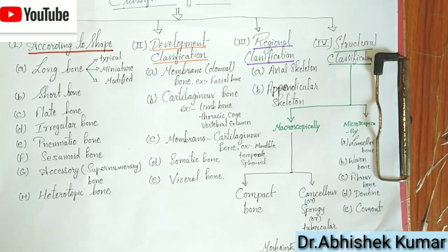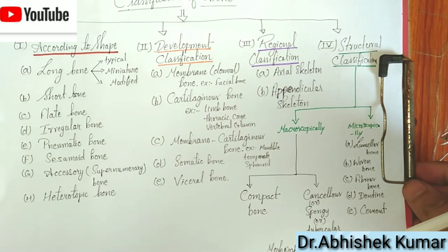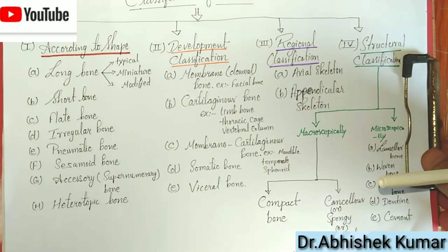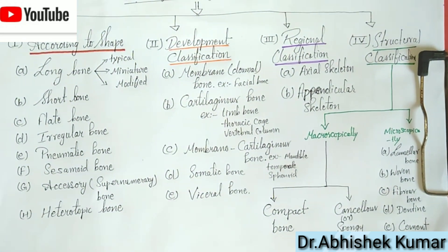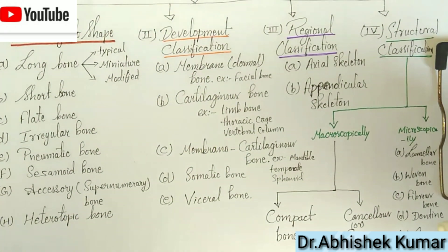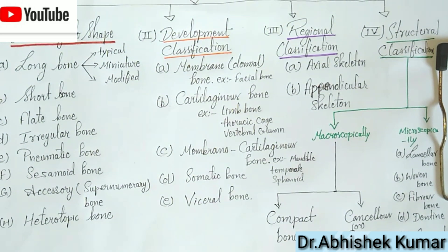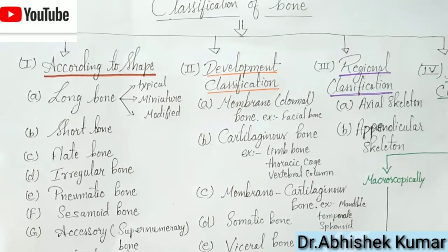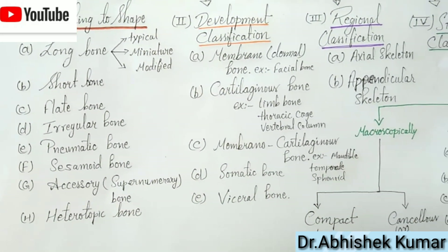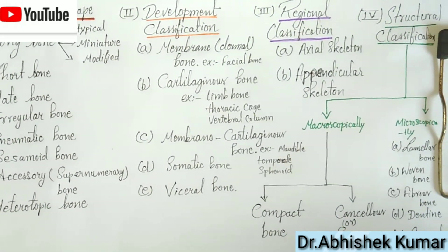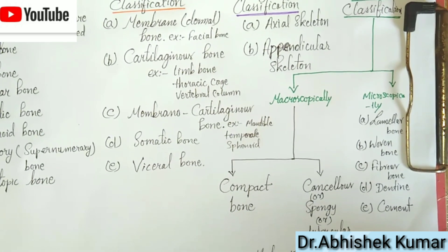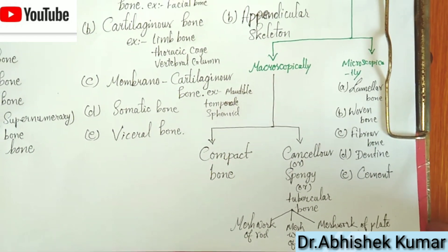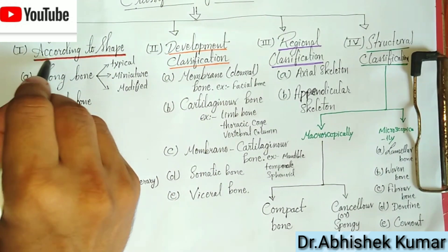In the shape classification: long bone, short bone, flat bone, irregular bone, pneumatic bone, sesamoid bone, accessory bone, heterotopic bone. In developmental classification: membranous, cartilaginous, somatic, and visceral. Regional classification: axial and appendicular. Structural classification: macroscopic and microscopic. You can see all the structures and the flowchart.